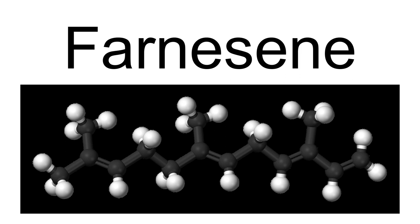The term farnesene refers to a set of six closely related chemical compounds which all are sesquiterpenes. Alpha-farnesene and beta-farnesene are isomers, differing by the location of one double bond. Alpha-farnesene is 3,7,11-trimethyl-1,3,6,10-dodecatetraene and beta-farnesene is 7,11-dimethyl-3-methylene-1,6,10-dodecatetraene.